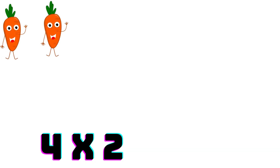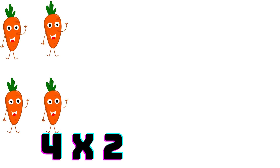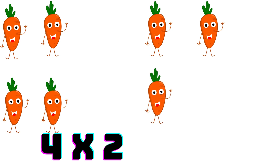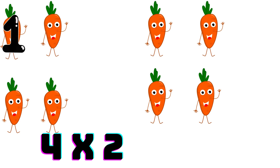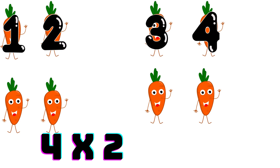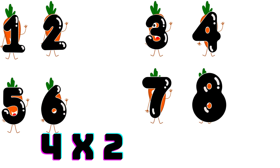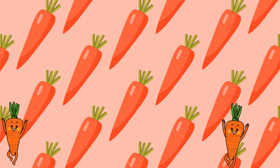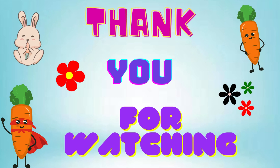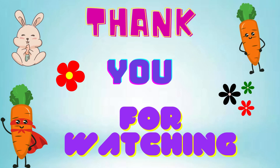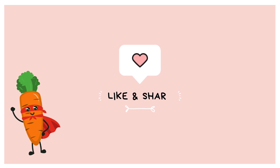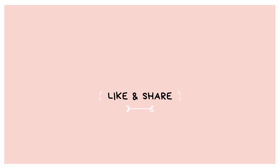Let's count four carrots. One, two, three, four. Now we count four more carrots. One, two, three, four. Let's count them all together. One, two, three, four, five, six, seven, eight. Four times two is eight.